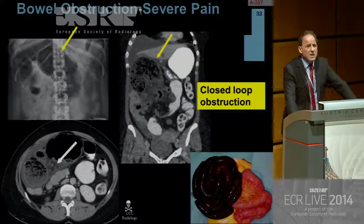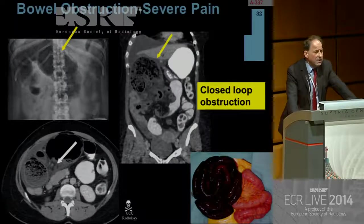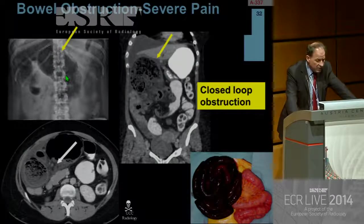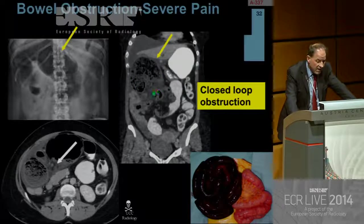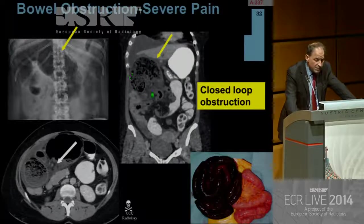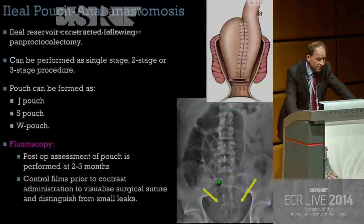CT helped in this complicated case of small bowel obstruction: a post-operative patient who developed severe pain had a loop of bowel in the right upper quadrant. CT clearly showed the same loop with a small bowel feces sign suggesting obstruction, and at the base of the mesentery there was a twist with lack of enhancement, suggesting ischemic small bowel due to a twist or internal hernia — confirmed at surgery.